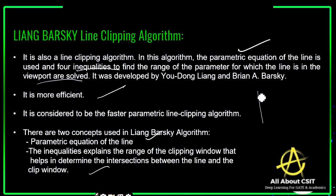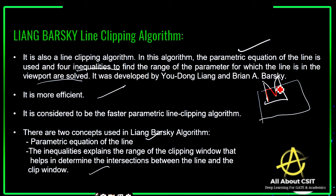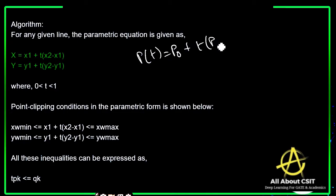Our final goal is: whatever polygon is present inside the clipping window, that needs to be considered — only the line present inside the clipping window is kept. Now, for any given line, the parametric equation is: P = P0 + t(P1 - P0).